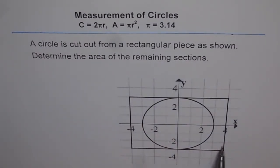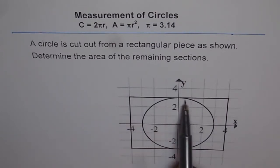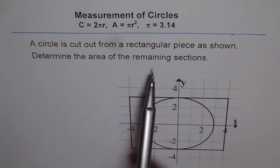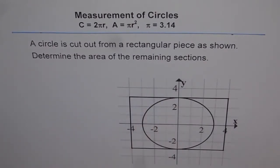This is a rectangular piece and from this piece we have taken out a circle. Determine the area of the remaining section. The question here is that this rectangular piece is used and we have cut out a circle from it.